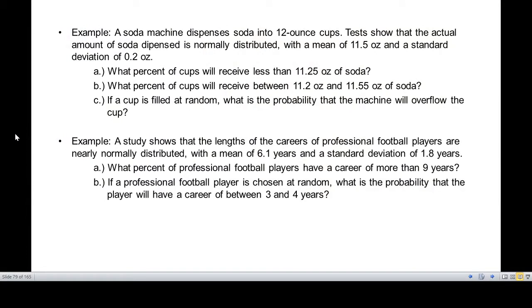Today we are going to solve an application of the standard normal distribution. A soda machine dispenses soda into 12-ounce cups. Tests show that the actual amount of soda dispensed is normally distributed with a mean of 11.5 ounces and a standard deviation of 0.2 ounce. The first question: what percent of cups will receive less than 11.25 ounces of soda?